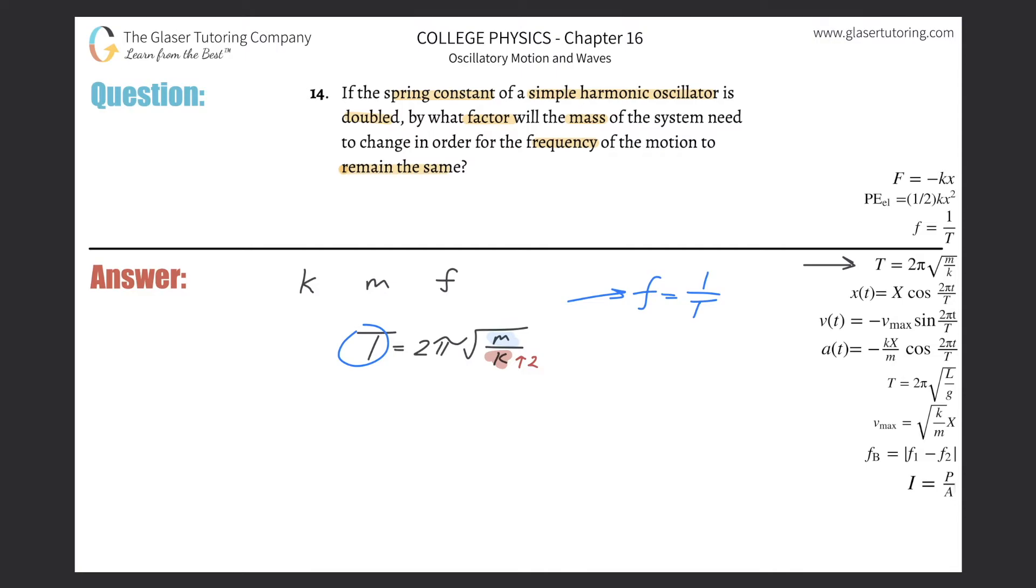So what that means is that basically if the period doesn't change then the frequency won't change as well. I'm not really going to do any substitutions, just note that if T doesn't change, f doesn't change. So I can reframe the question: instead of saying in order for the frequency to remain the same, in order for the period to remain the same, that would be the same thing.